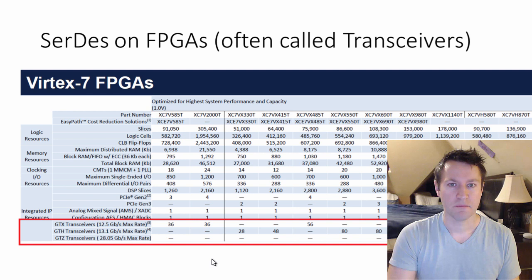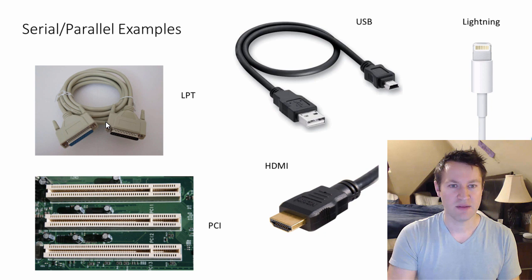Before we jump into the SerDes transceivers, I want to give you background about parallel and serial data. On the left side we have an LPT cable, an old printer cable. This is parallel style communication. PCI, like might be found in your motherboard, that is a parallel interface. These are more of the old interfaces, and people have really switched to serial communication more recently. For example, USB—universal serial bus—HDMI is serial communication, your lightning cable is serial. Serial is the present and future of high-speed communication interfaces.